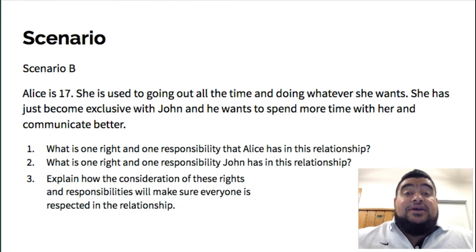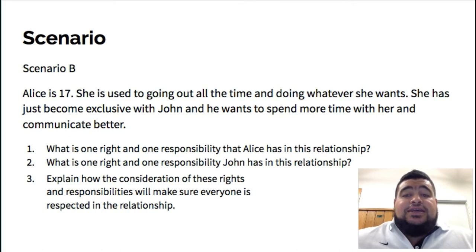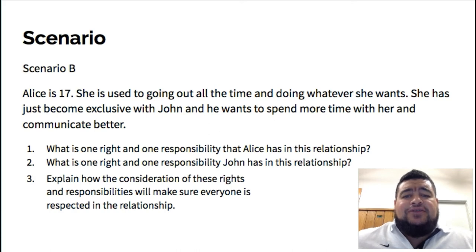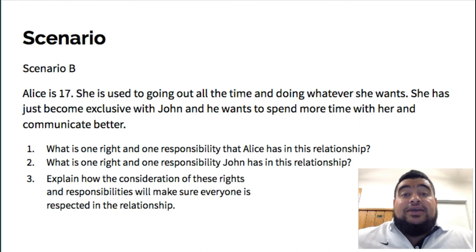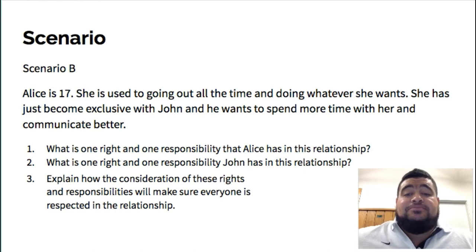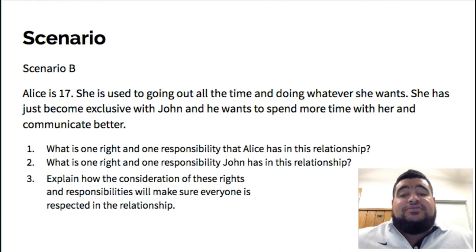Next one: scenario B. Alice is 17. She is used to going out all the time and doing whatever she wants. She has just become exclusive with John, and he wants to spend more time with her and communicate better. 'Exclusive' is a bit of a strange term — assuming it means that they don't have any other partners. Number one, what is one right and one responsibility that Alice has in this relationship? Number two, what is one right and one responsibility that John has in this relationship?